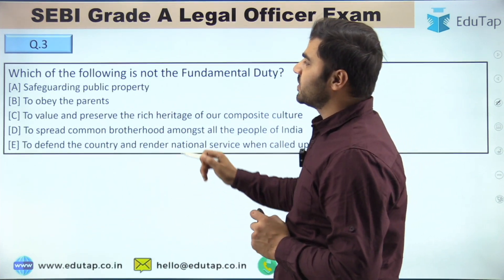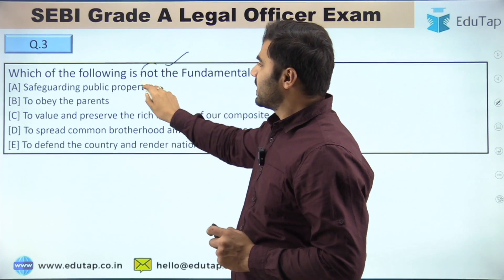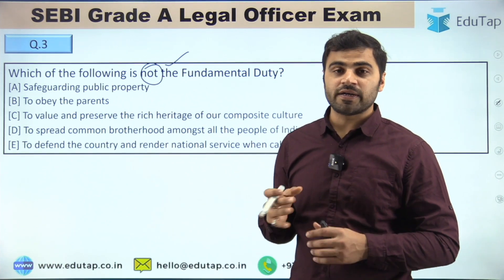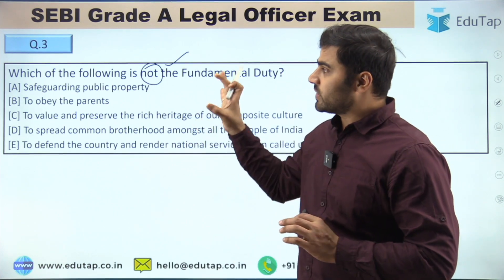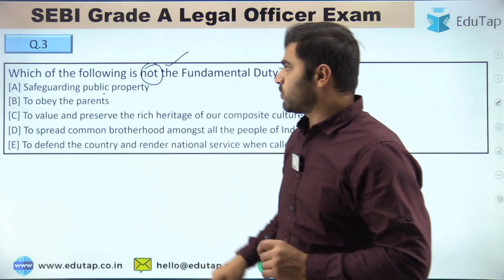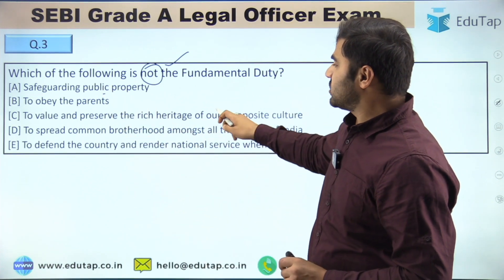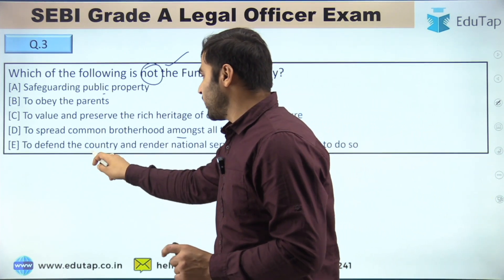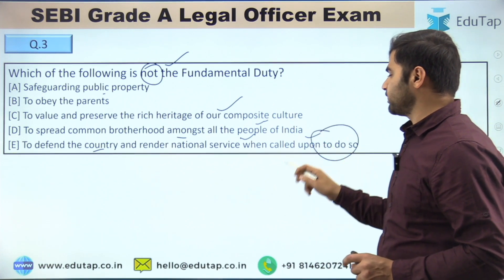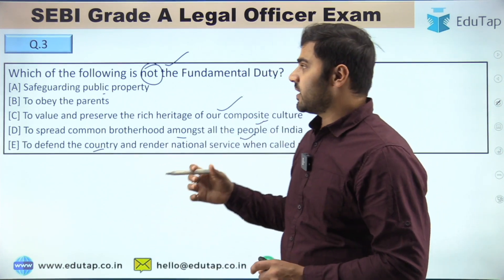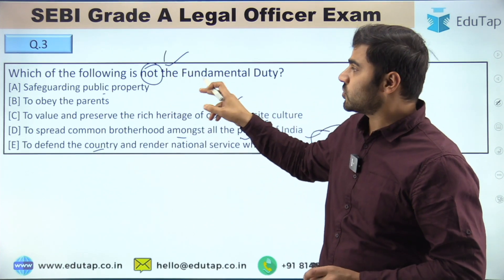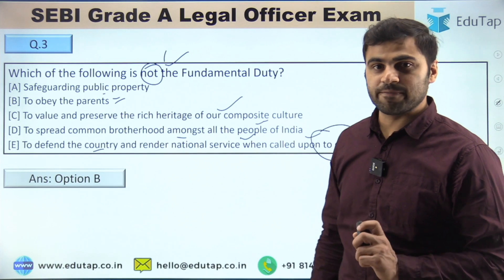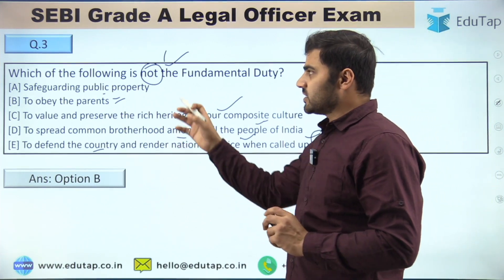Question number 3: Which of the following is NOT a fundamental duty? Do read the question properly — sometimes questions are about a negative statement but we assume it is positive and attempt it wrong. Options are: safeguarding public property; to obey the parents; to value and preserve the rich heritage of our composite culture; to spread common brotherhood amongst all the people of India; or to defend the country and render national service when called upon. The right answer is option B — 'to obey the parents' is not a fundamental duty mentioned under Article 51A.